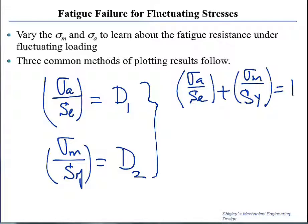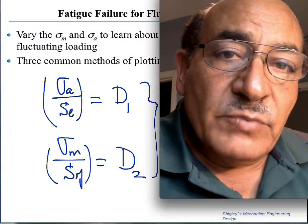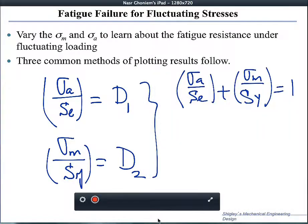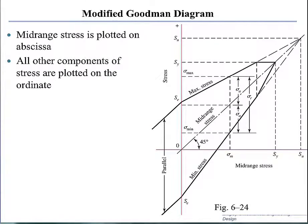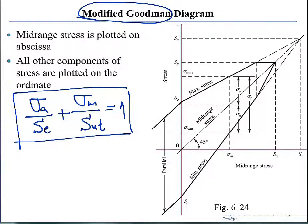There are a variety of ways to do this combination, and they are dependent on how we interpret the experimental data. The first method we will discuss is called the Modified Goodman method. In this method, we combine both stresses such that sigma alternating divided by S_endurance plus sigma mean divided by S_ultimate equals 1. This is our criterion for adding the damages.